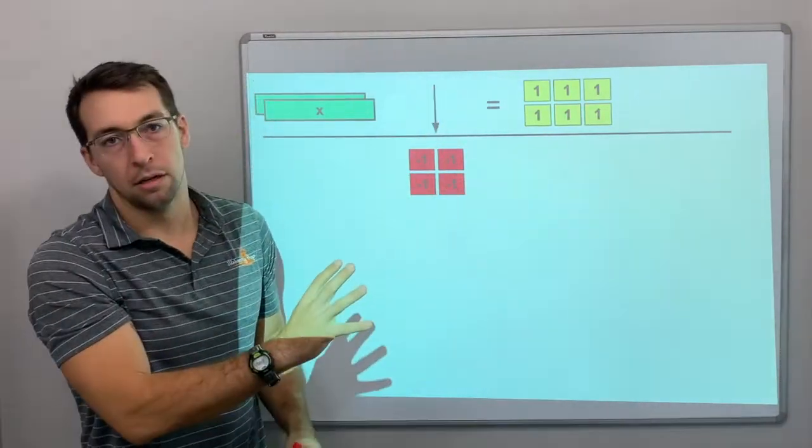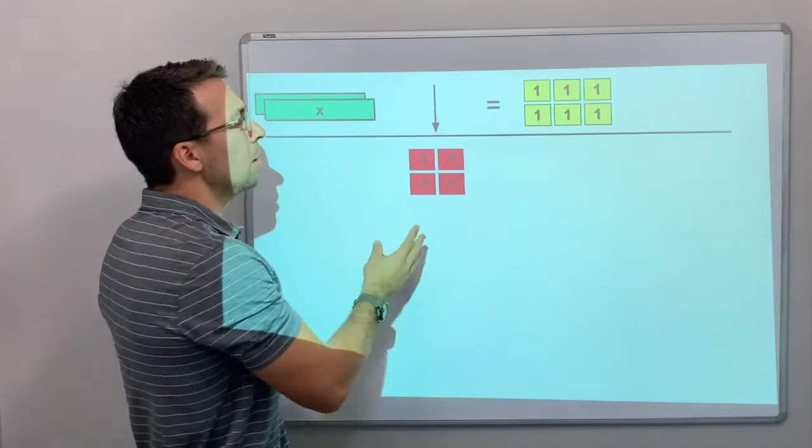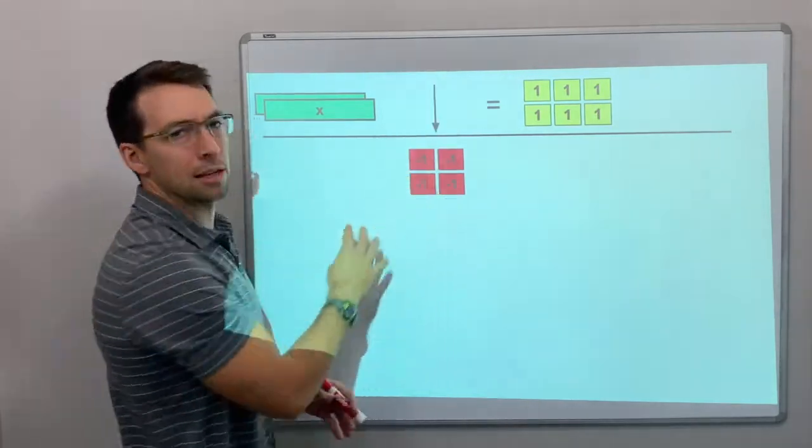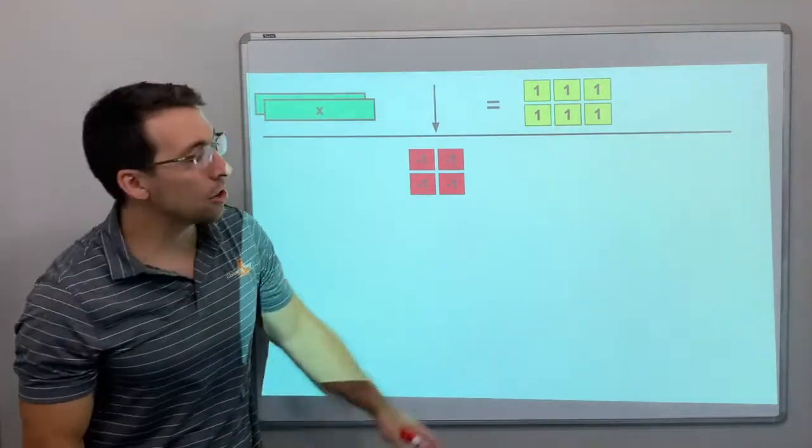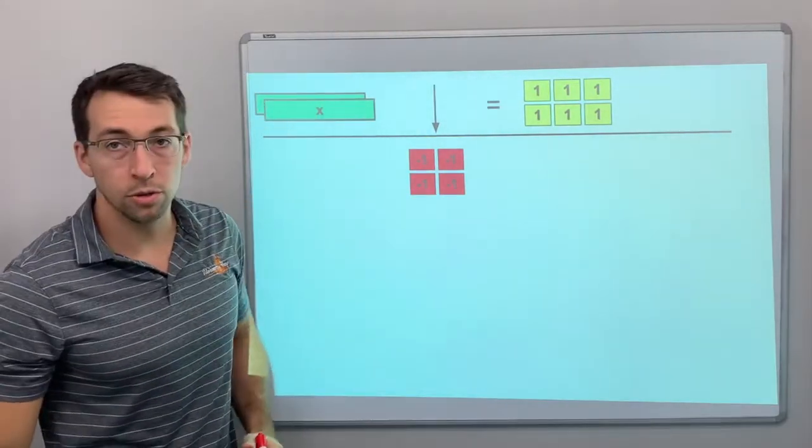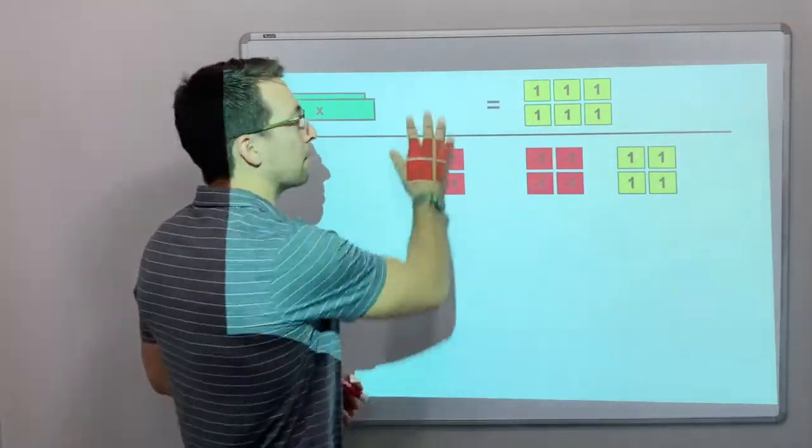So we drop it. Well, what happens when you do something to one side of the equation? You have to do it to the other. So let's add our zero pair to the other side, right? What happens? We drop it.